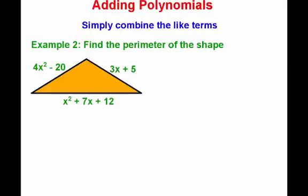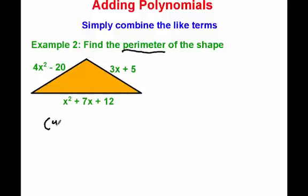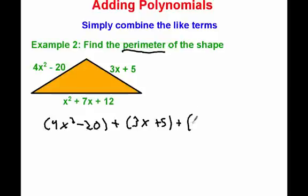Let's look at another example. I'd like you to pause the video and copy this problem down into your notes so we can go over it. Now that you've written this down, let's look at our problem — it says find the perimeter of the shape. The perimeter is just the distance around the outside of a shape, so we take the length of each side and add them up. Our lengths are all polynomials: 4x squared minus 20, plus 3x plus 5, plus x squared plus 7x plus 12. Pause the video and try working this one out on your own.